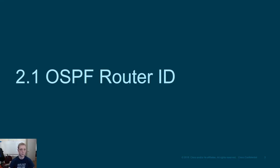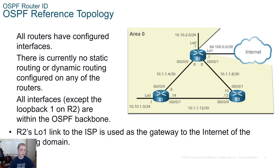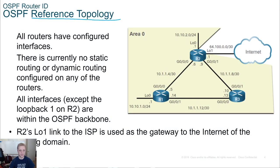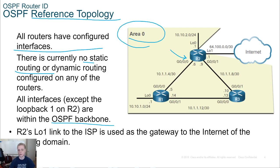Moving forward with OSPF router IDs. In this reference topology, all routers will have configured interfaces - you should already know how to put an IP address on and activate an interface. There's no static or dynamic routing yet until we start these examples. All interfaces are in OSPF area zero, also known as the backbone area, except for the one that goes to the internet.